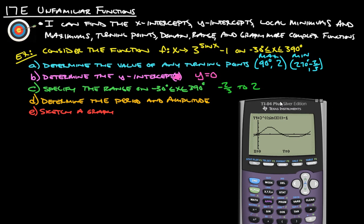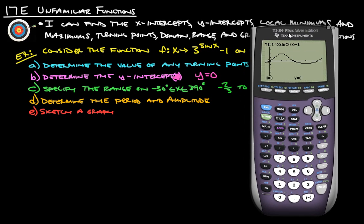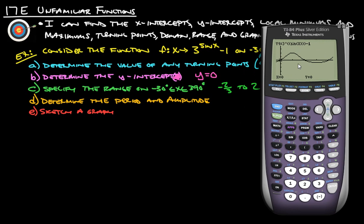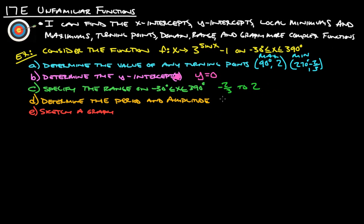And next, we are going to determine the period and the amplitude. So the period here is how long it takes it to repeat, and it starts repeating here after 90, 180, 270, 360. So our period is going to be 360 degrees.